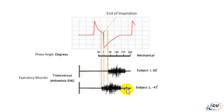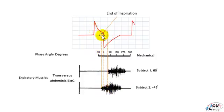In subject 2, you can see that the patient started to have expiratory muscle activities. When you relate this to the flow-over-time curve, you can appreciate that the patient started these activities prior to the termination of inspiration. And this is what we call early termination.